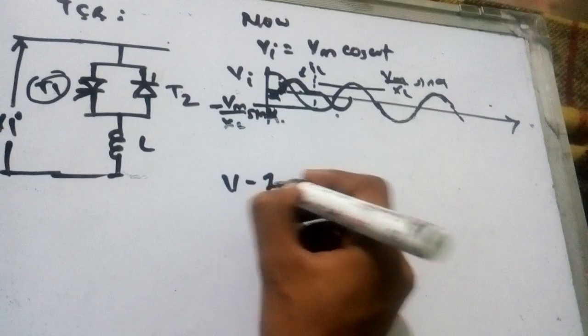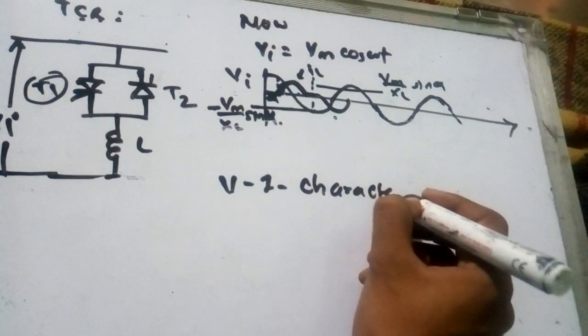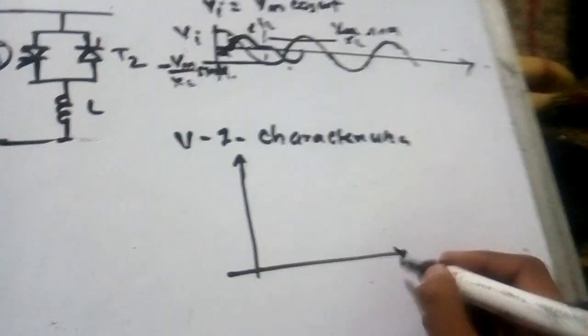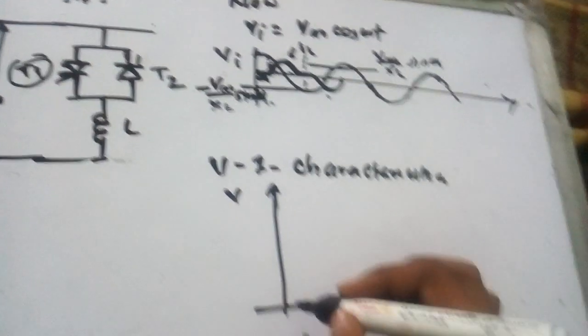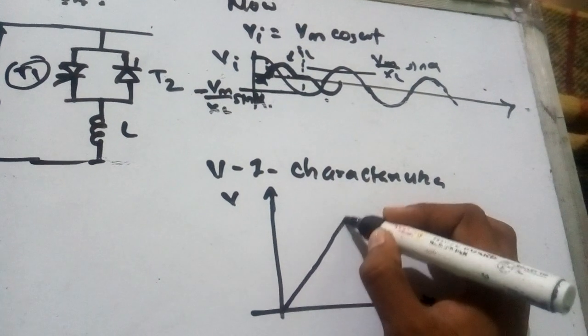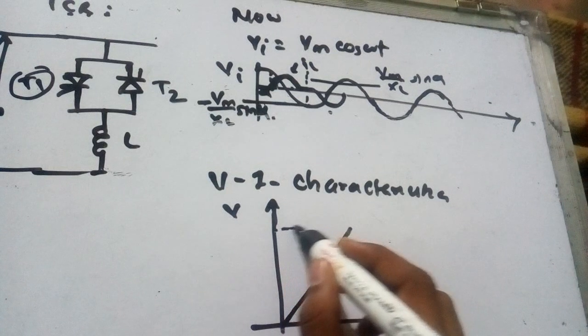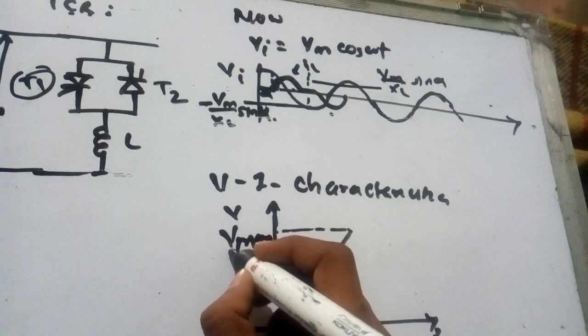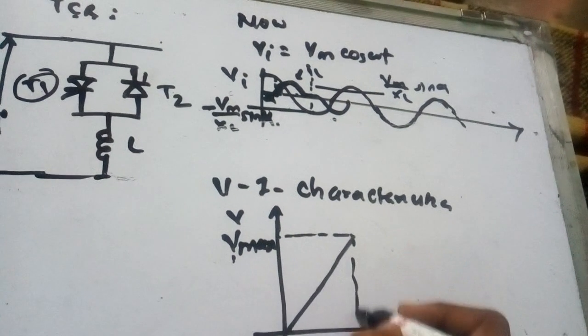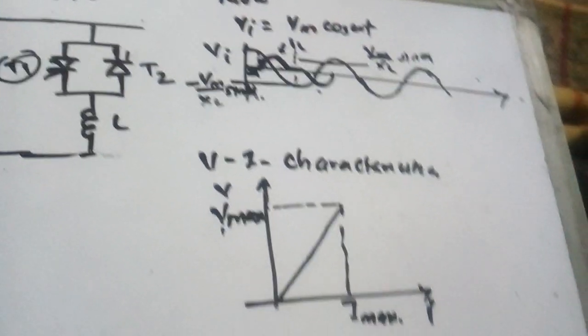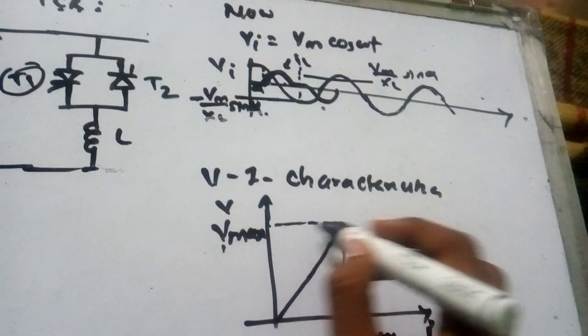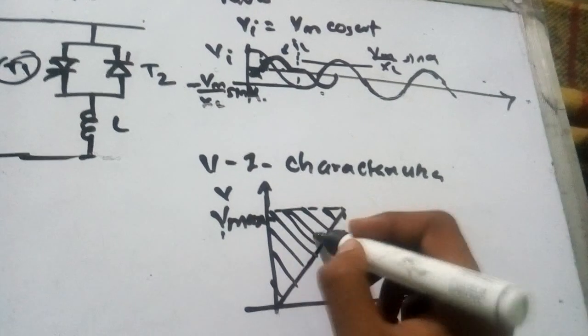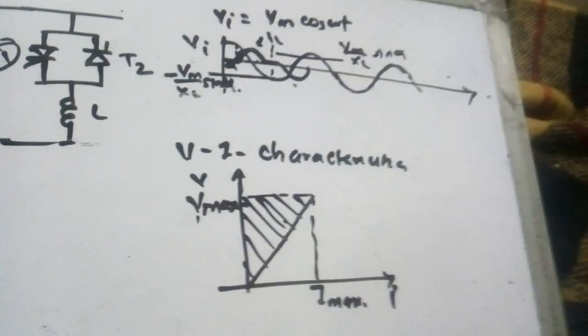VI characteristic: this is current I, this is voltage V. This is Vmax, and this is the operation region.